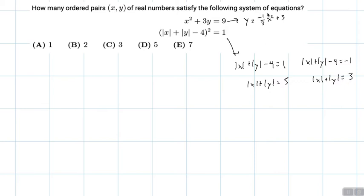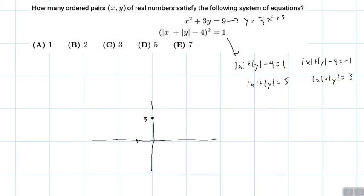So first, graphing that parabola. The vertex will be at three, and it's going to hit at negative three and three and go down like that.